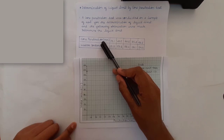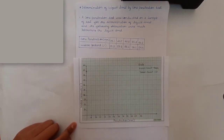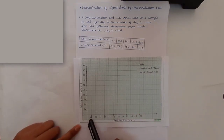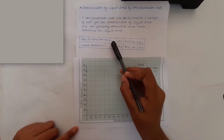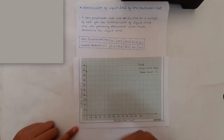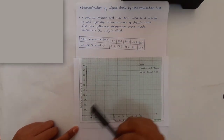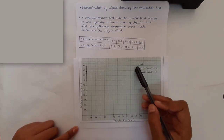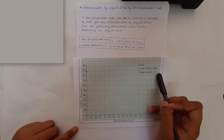For cone penetration, the least value is 19.1 and the highest value is 26.3, so the scale starts from 19 and goes up to 27. For water content, the least value starts from 59 and ends at 60. The x-axis scale is 1 unit equal to 1 mm, and the y-axis scale is 1 unit equal to 1 percent.